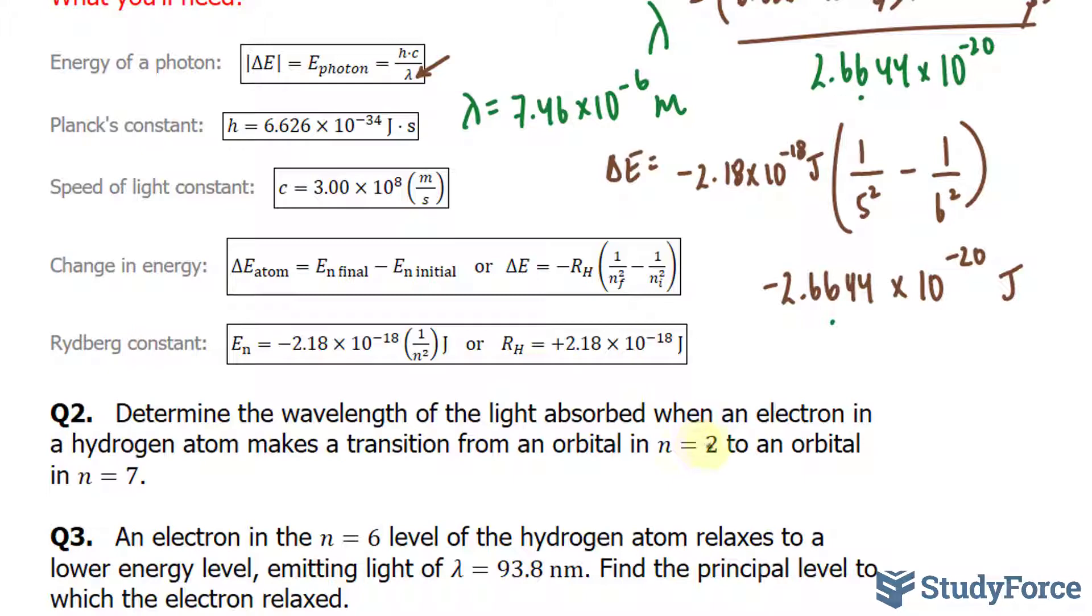So we're going from an n level of 2 to an n level of 7. And that's important that you know this because depending on what the final and initial n levels are, those numbers get placed in there. So the first thing that I'll do is find out what delta E is and then place that number into here and solve for lambda. Let's go ahead and do that.